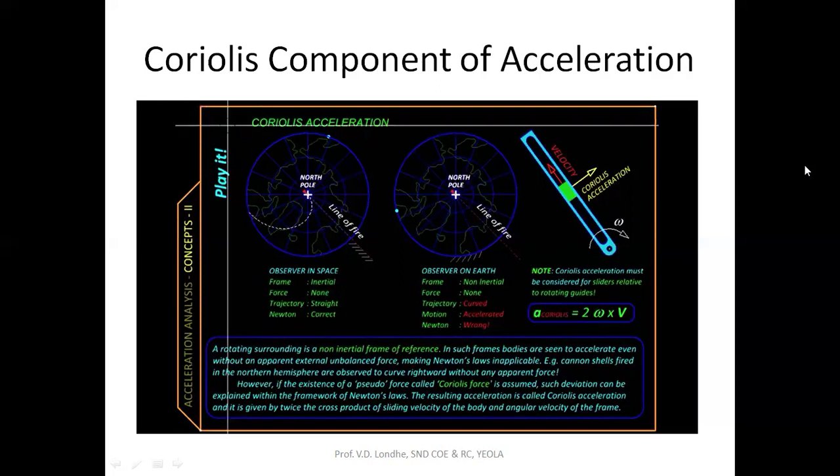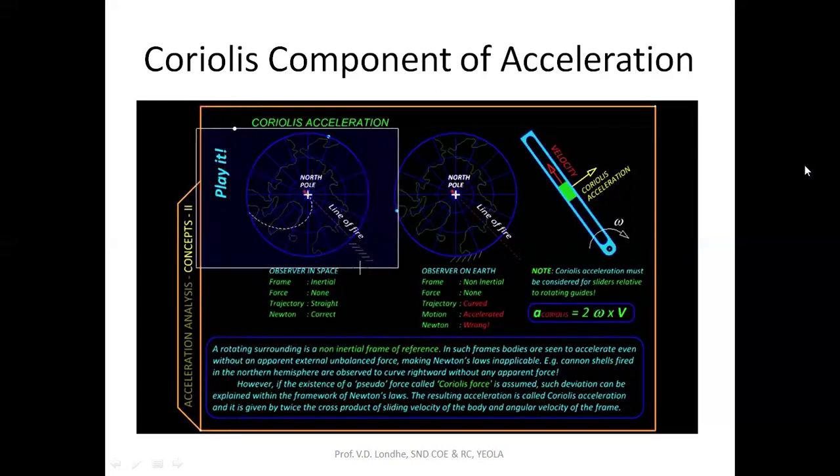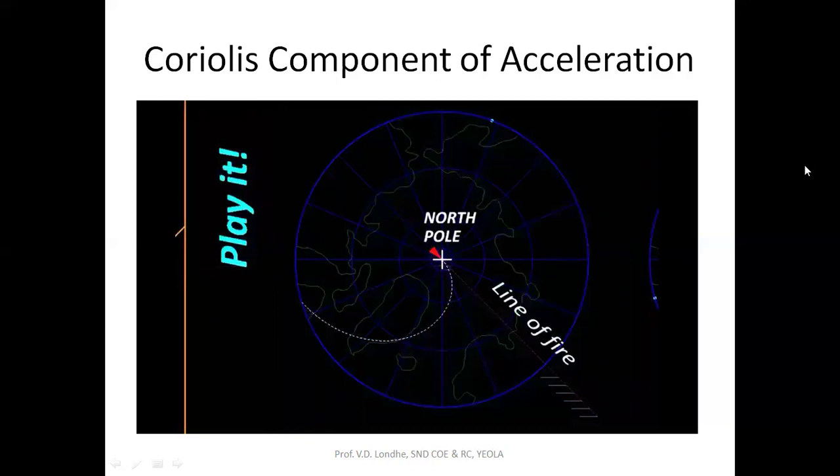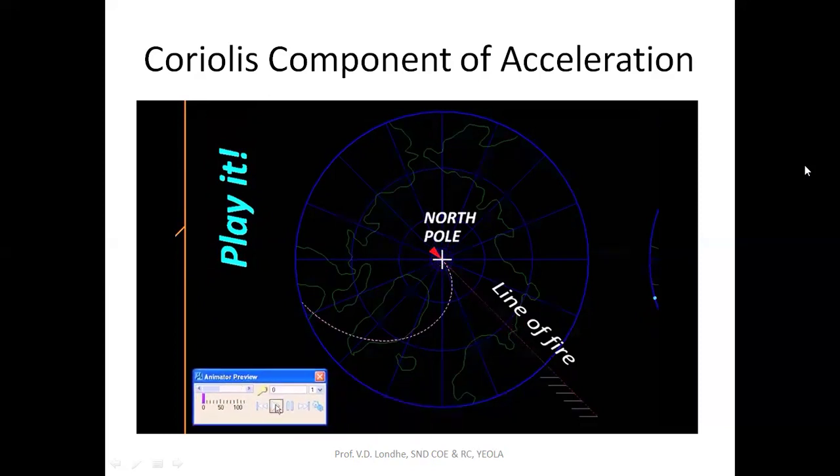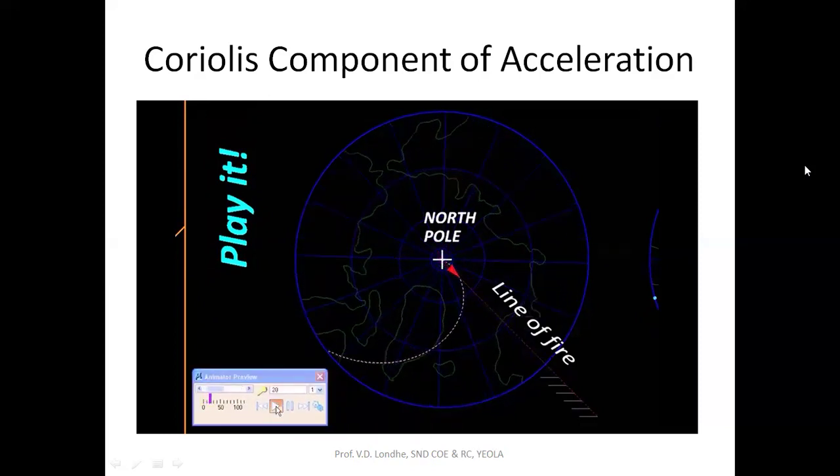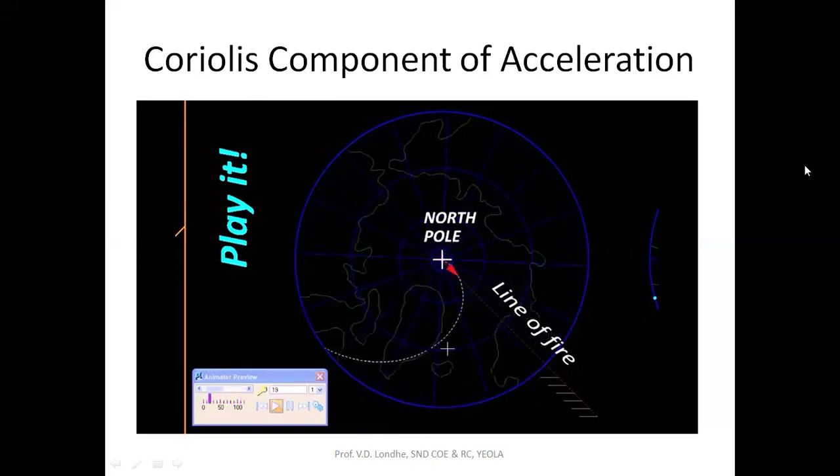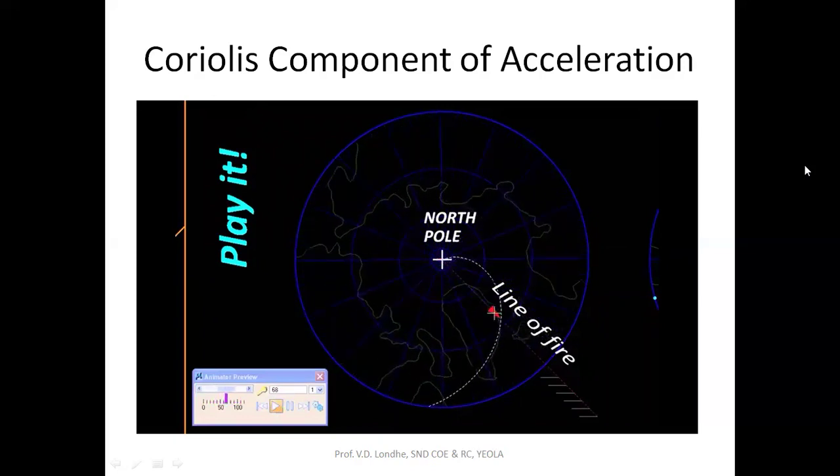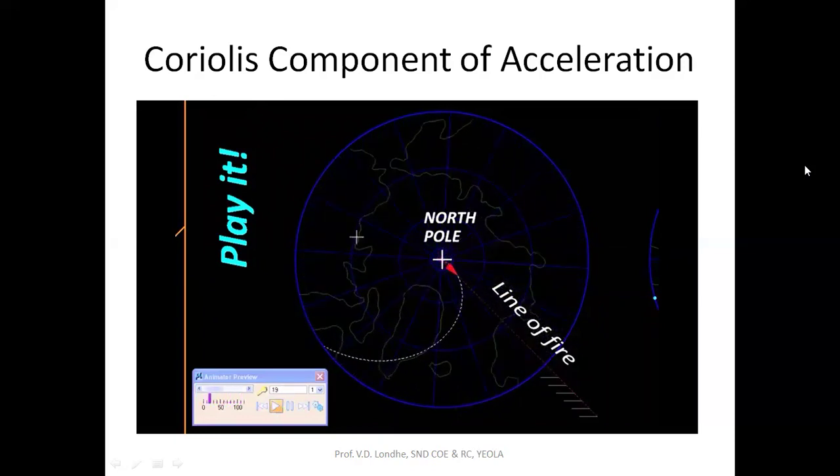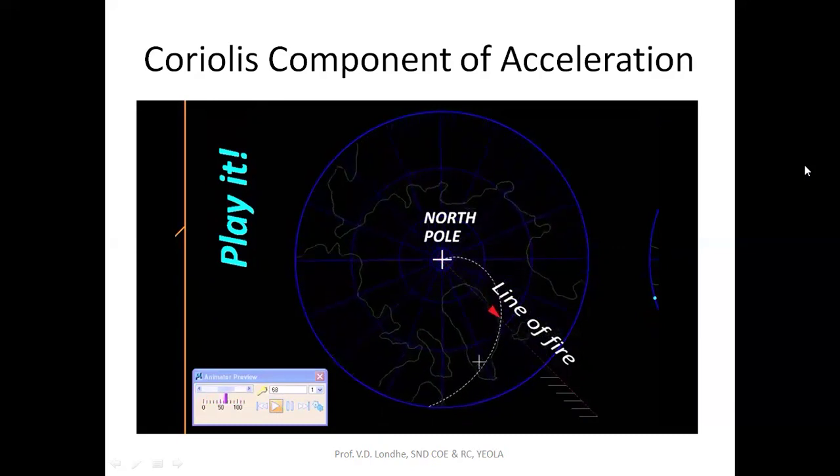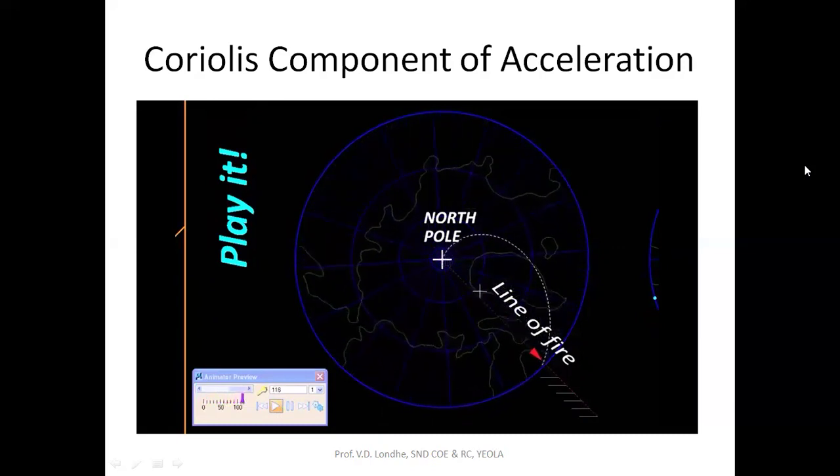We are going to place ourselves into outer space right above the North Pole and watch a cannon shell fired from the North Pole. Here we have this shell in the form of this red arrow, and we'll be firing it along this straight line. You'll observe that as the shell is progressing along its path, the Earth is rotating underneath. The shell starts and goes in a straight line.